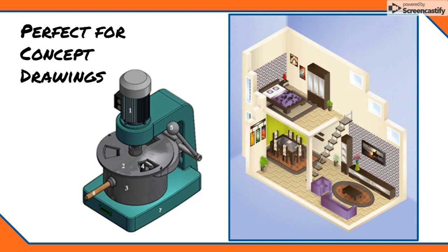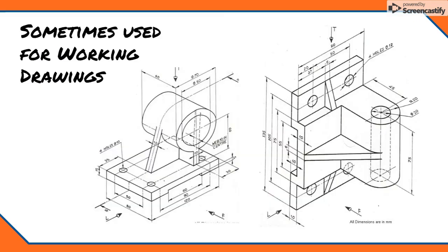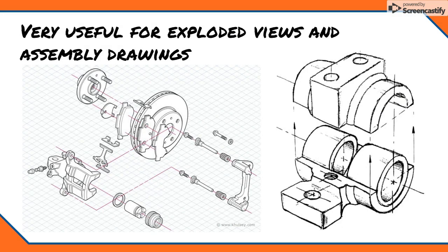Because isometrics give us a realistic looking 3D view of the object, they are most commonly used as concept drawings, or to show the reader the general idea of what the part or object looks like. But because the edges of an isometric are drawn without perspective distortion, they're also sometimes used as working drawings in situations where all of the features of a part can be accurately dimensioned on just one view without becoming too complicated to read. Isometrics are also commonly used to show how the parts of a product go together in assembly drawings and exploded view drawings.